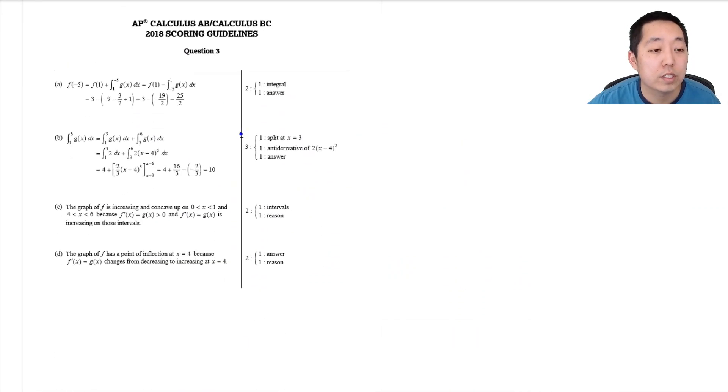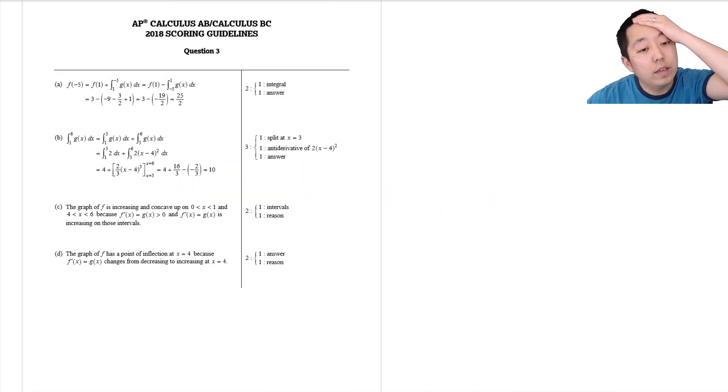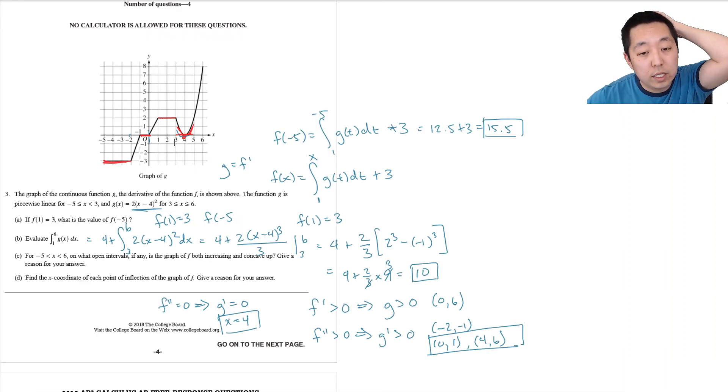All right, let's take a look at the answers to number 3 here. Why did I mess that up? Oh, 15.5, that's what I got, 15.5. And that's no, that's 12.5. I did 3 and they got 19 over 2. Let's see.